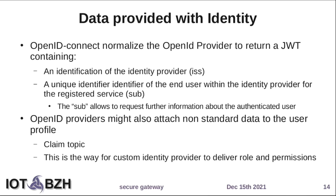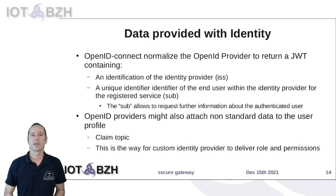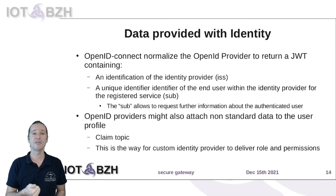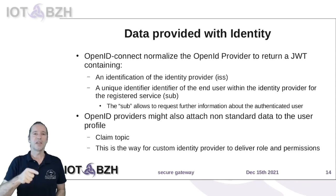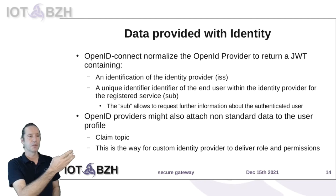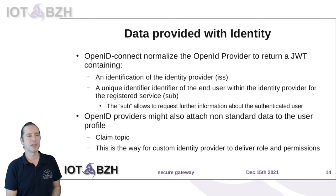The data provided by the identity provider on strict OpenID Connect protocol is very limited. You have two things: the identity of the identity provider itself, and an identifier of the user in the context of that identity provider. If you control the identity provider, you can also implement specific claims that add data about the user — but you must master the identity provider to do so.